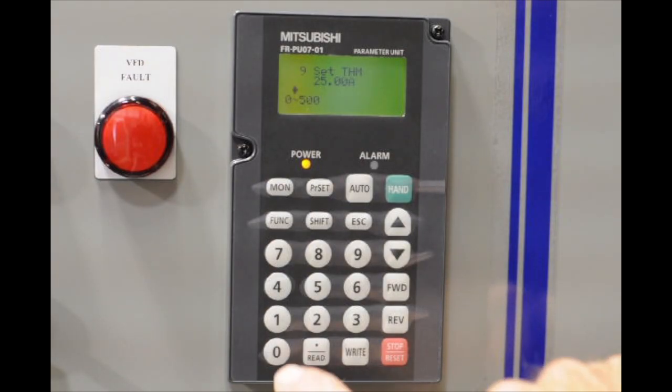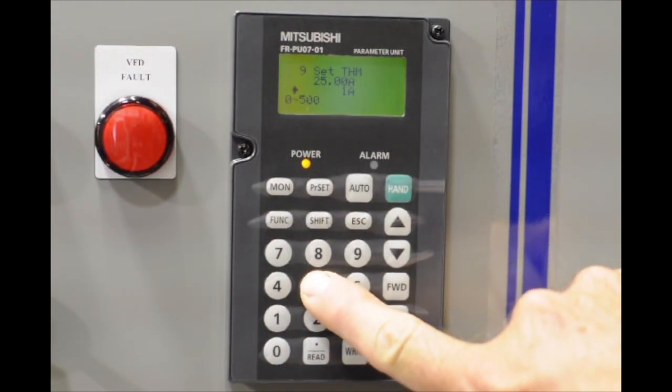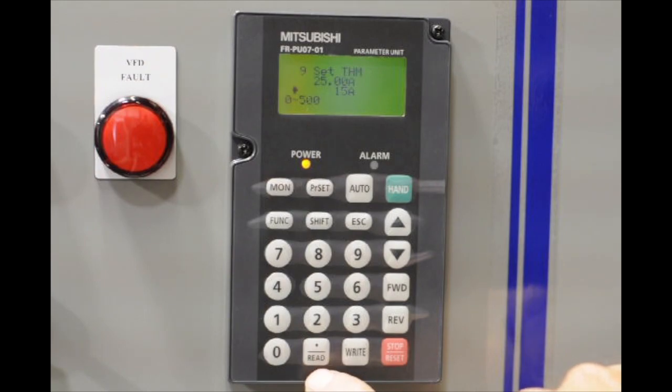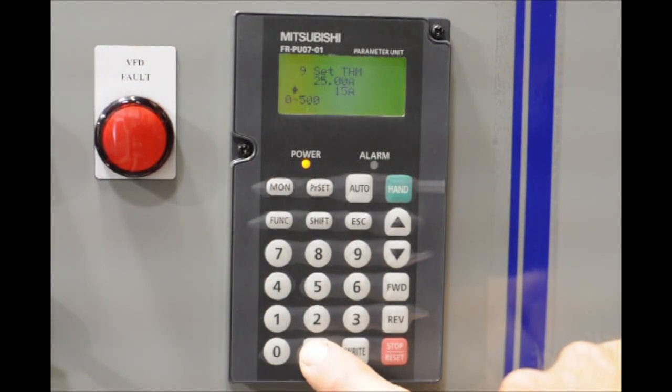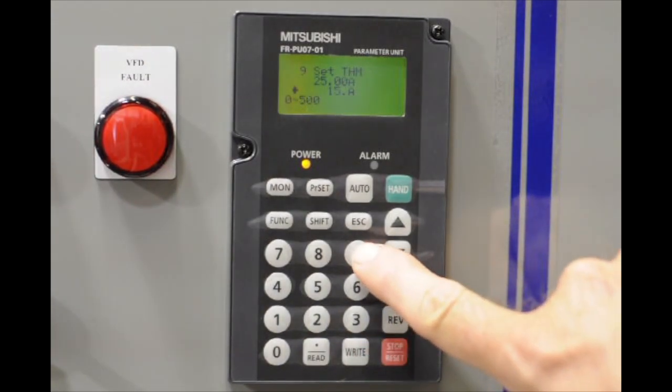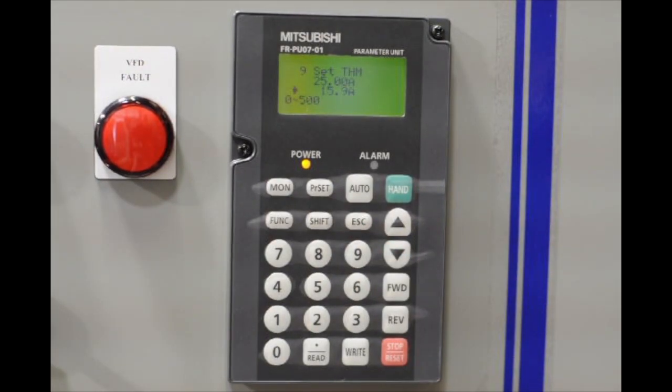You can go ahead and easily type that in by typing one five, and the read button actually acts as a decimal point as well, and we're going to go ahead and find the number nine. Now, we've just entered fifteen point nine, and we're going to confirm it by hitting write.